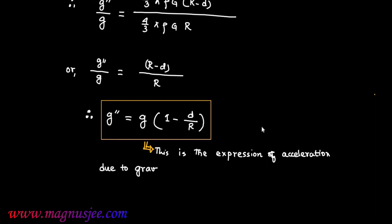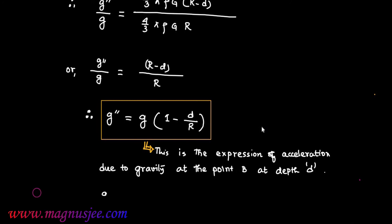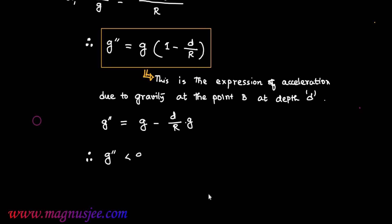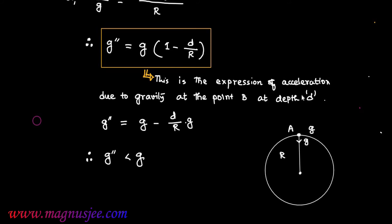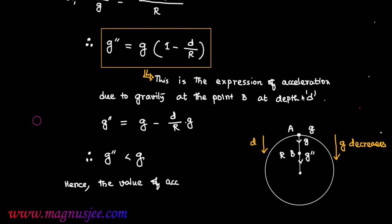This is the expression for acceleration due to gravity at point B at depth D. Therefore g'' = g − (D/R)·g, so g'' is less than g. If we increase depth D, g decreases. If we move downwards, g decreases. Hence the value of acceleration due to gravity decreases with depth.